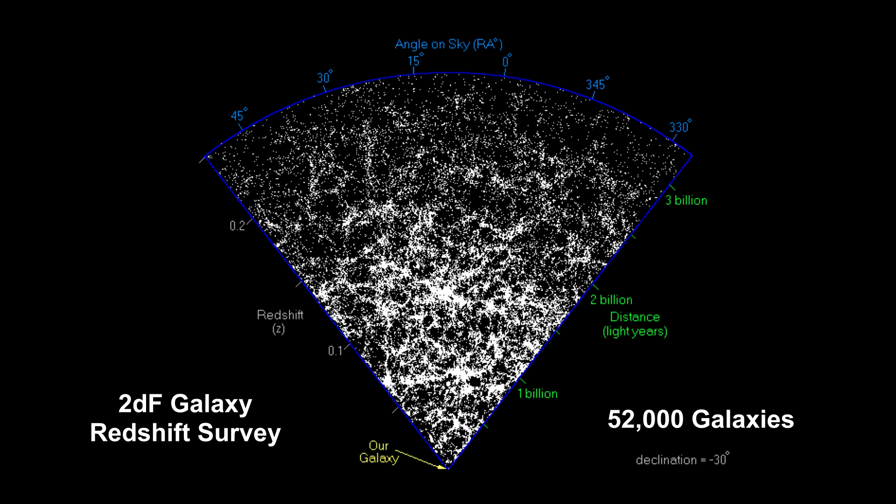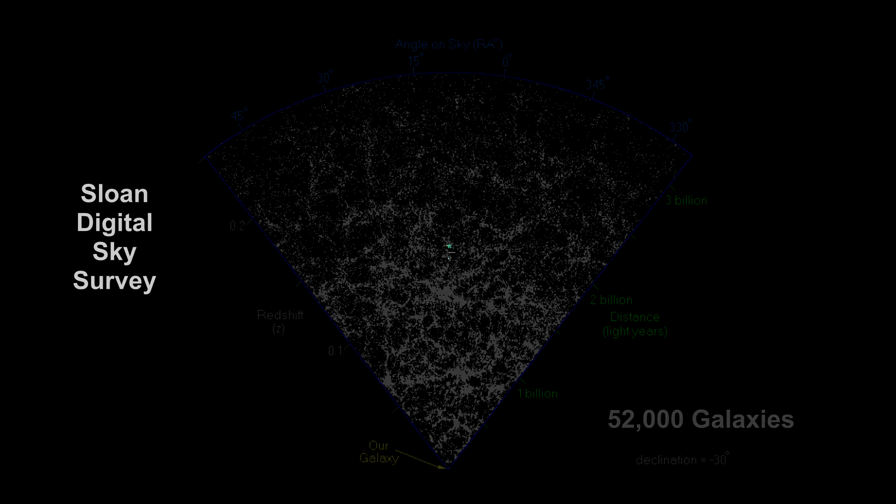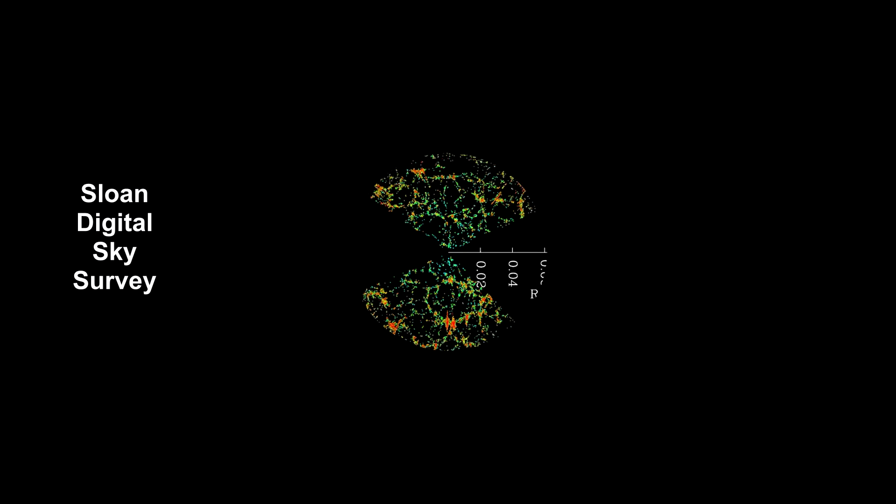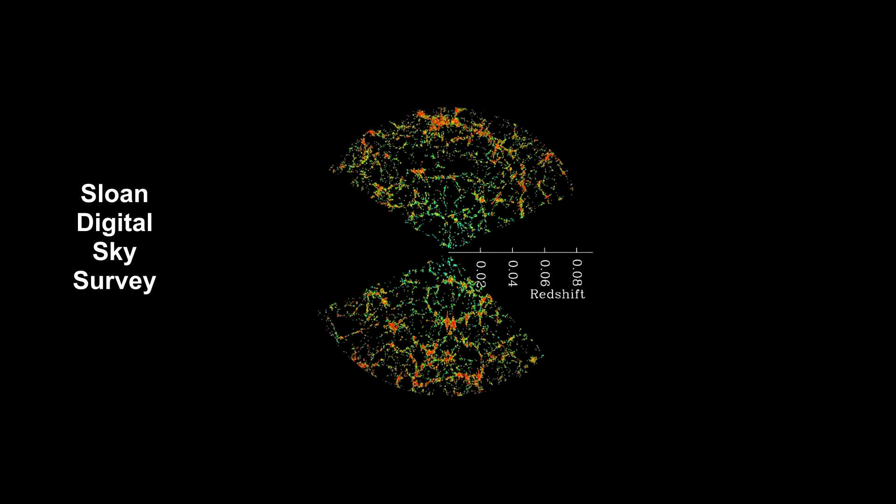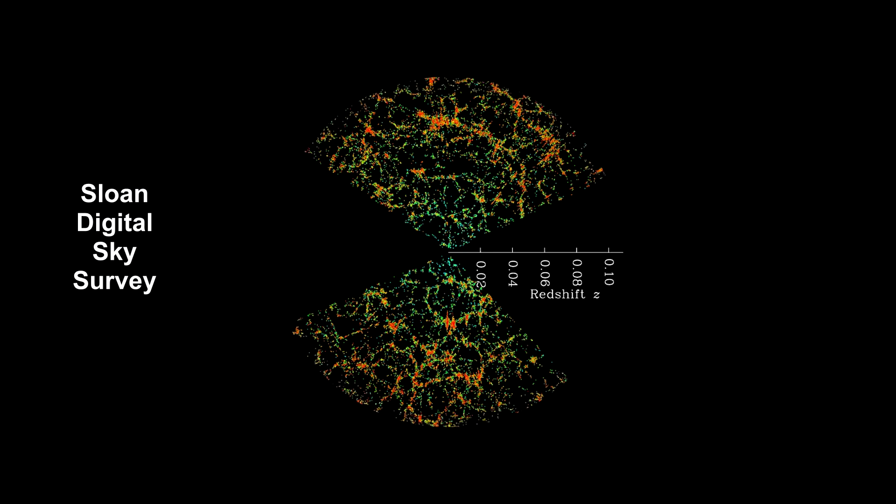By collecting distances to thousands of galaxies in a narrow strip of the sky, it is possible to produce a slice of the universe, like this one from the 2DF Galaxy Redshift Survey. In 2003, this survey looked out into the universe to 3.5 billion light years. Between 2000 and 2008, the Sloan Digital Sky Survey conducted one of the most ambitious and influential surveys in the history of cosmology. Over eight years of operations, it obtained deep, multicolor images covering more than a quarter of the sky and created a three-dimensional map containing more than one million galaxies.